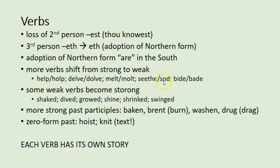Bide: 'I bade my time.' But here's the weird thing — some weak verbs become strong. Shaked, dived, growed, shined, shrinked, swinged — these were all weak verbs in the early modern English period for the most part, and they all became, by analogy with other strong verbs, strong verbs: I shook, I dove, I grew, I shone, I shrank, I swang. So there's still a lot changing in the verb system.